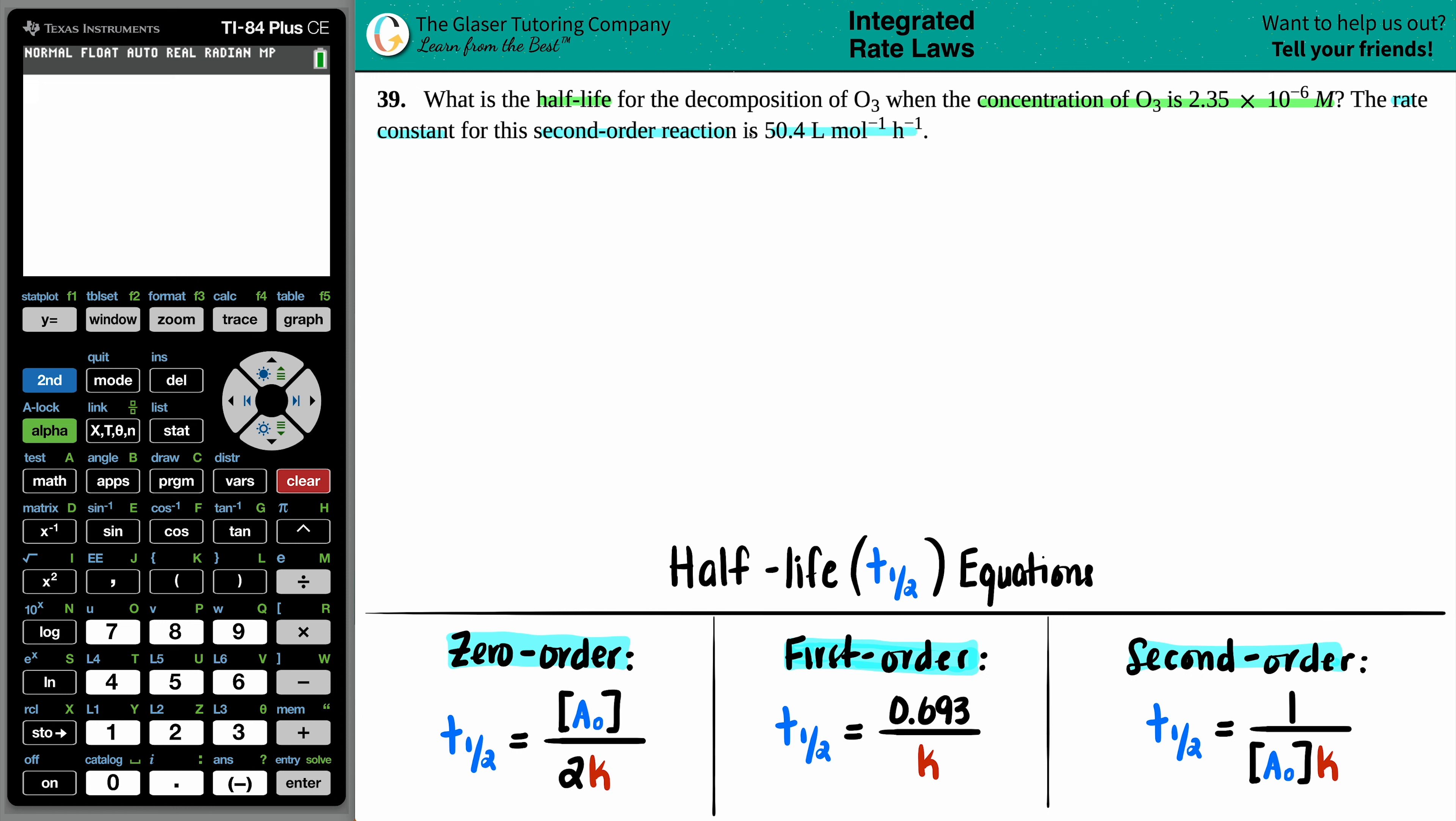Okay, so in essence, we have to find the half-life. Now a half-life is the, actually I'll say half-life, the half-life is the amount of time it takes for a substance to decompose or break down into 50%. So if you have eight slices of pizza and you eat four of them,